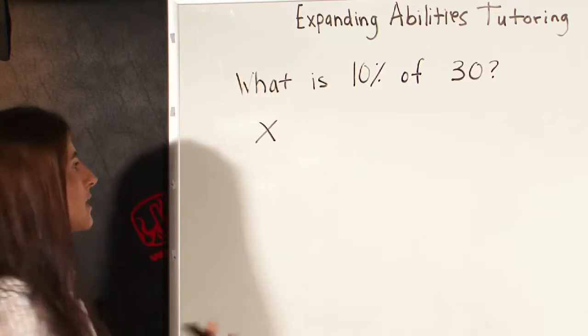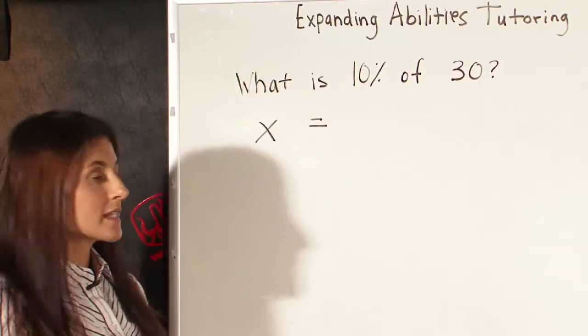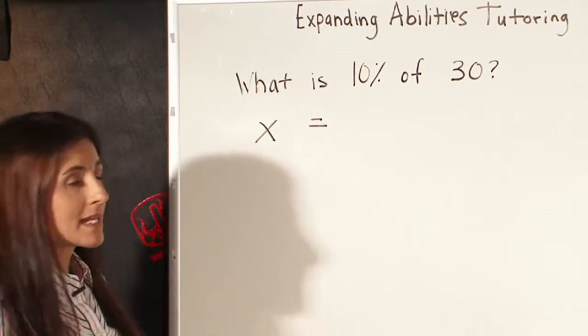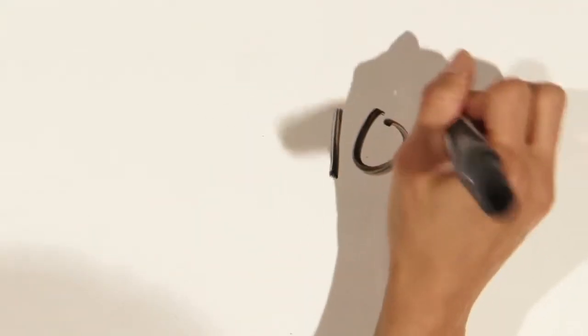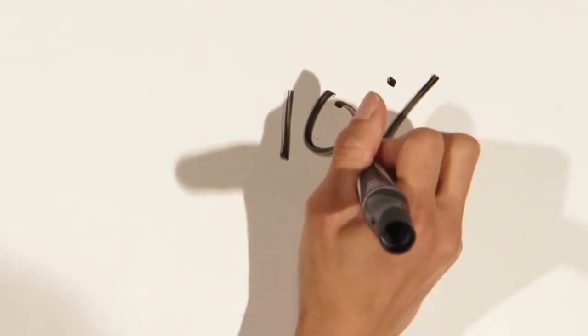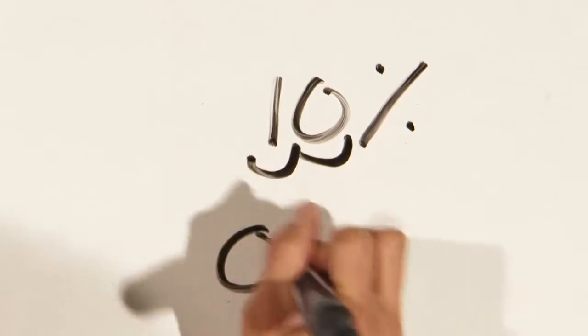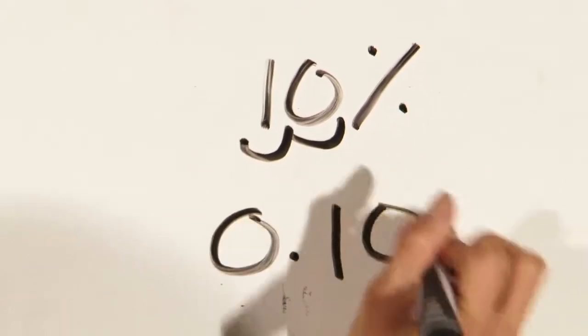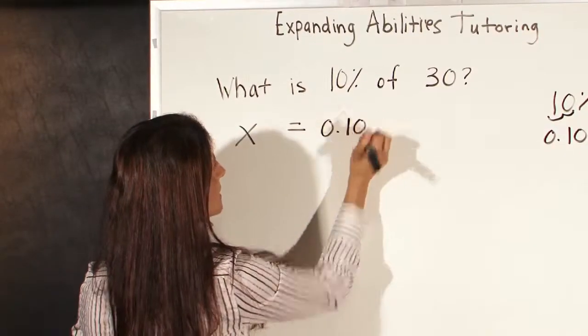Is always means equals. So x equals 10%. We always want to write our percentages as a decimal. So 10 has a decimal point at the end of it, and we always want to move the decimal point two places to the left, one, two. And so as a decimal, 10% would be written as .10.